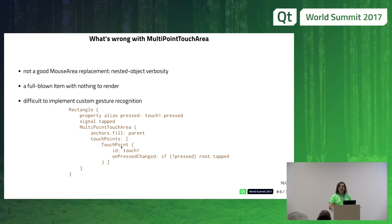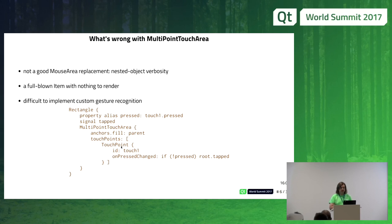MultiPointTouchArea was actually written to do custom gesture recognition. I've tried doing that — you have to write a lot of JavaScript, keep some state, basically write a state machine in JavaScript with state transitions to eventually recognize a custom gesture. I thought maybe it would be nice to do that in C++ instead.